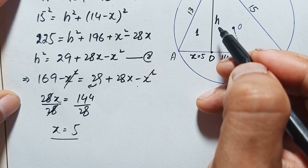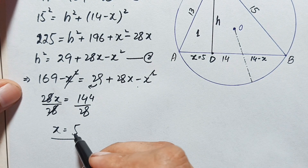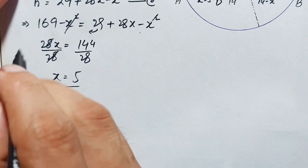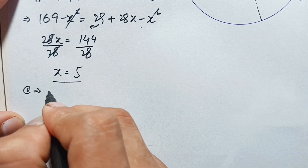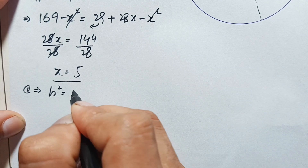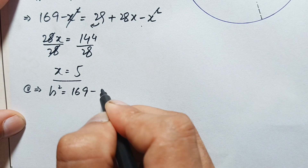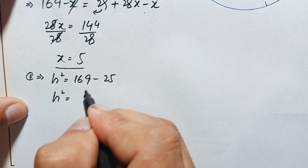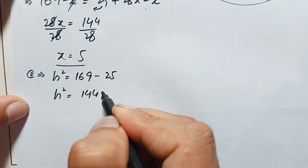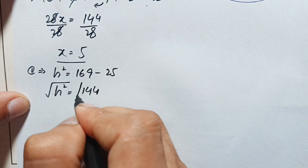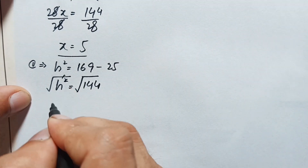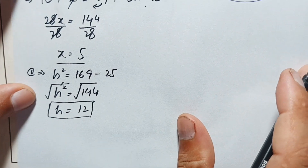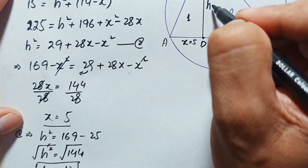Now substituting x equals 5 into Equation 1: h squared equals 169 minus 5 squared, which is 169 minus 25 equals 144. Taking the square root of both sides, h equals 12. So our height is 12 units.